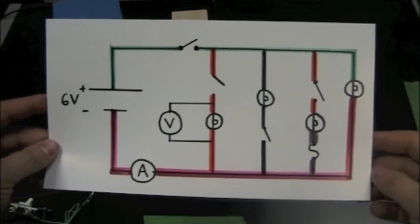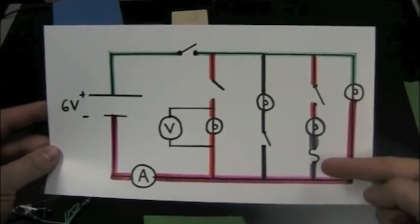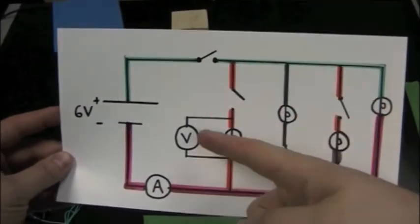Four branches, four bulbs with some switches, a fuse this time, a master switch, an ammeter, voltmeter. Let's get going.